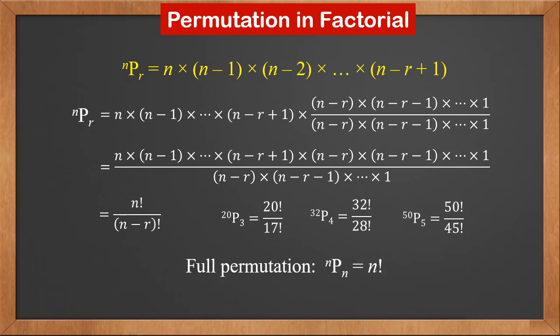NPN is called full permutation. It is equal to N factorial. That is to arrange N items altogether.